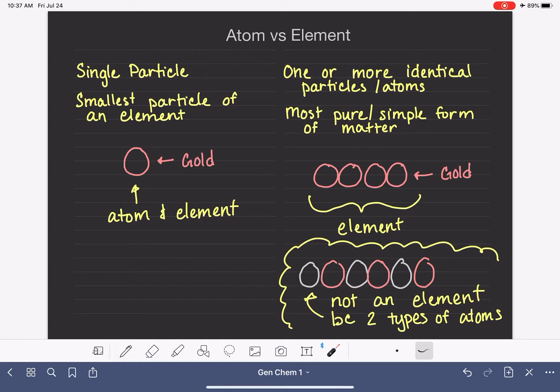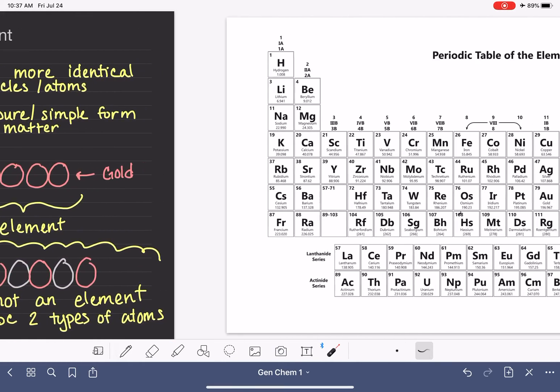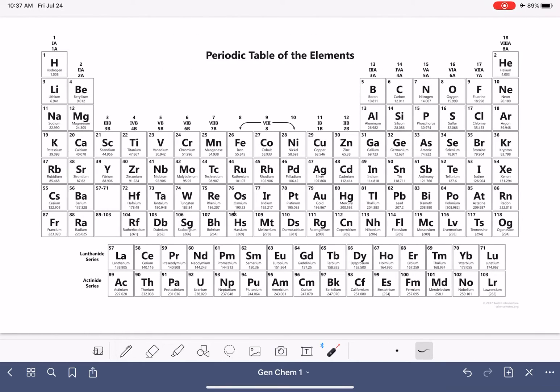This is a good time to take a look at the periodic table. The periodic table is a list of all of the elements or all of the atoms that have been discovered or synthesized. There's 118 of them. So each one of these boxes represents a unique atom or a unique element.